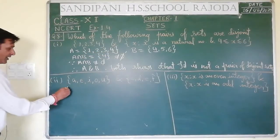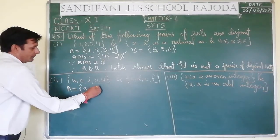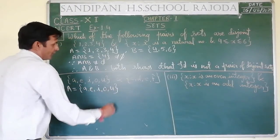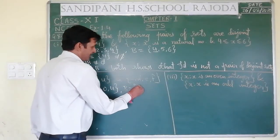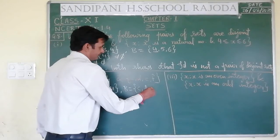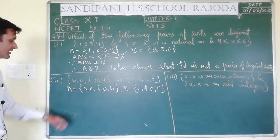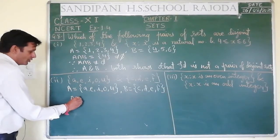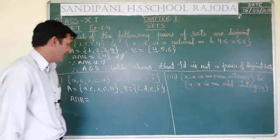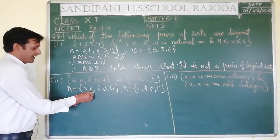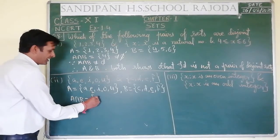Now in this question we will assign A = {A, E, I, O, U} and we will assign B = {C, D, E, F}. Because it is clearly given here, in this case we will find A intersection B. So which element is there that is in A and also in B? There is one such element — E — which is in A and also in B. So here also one element appears.